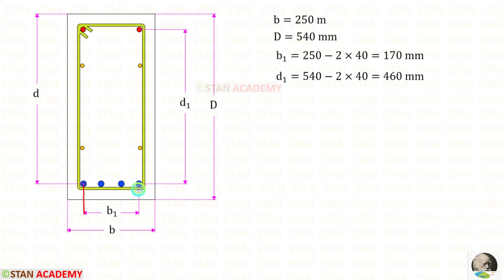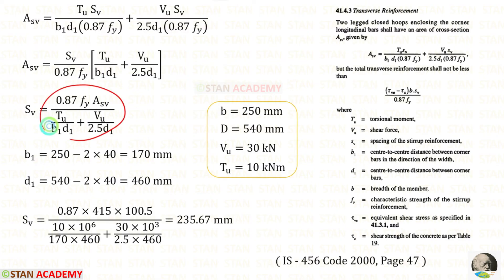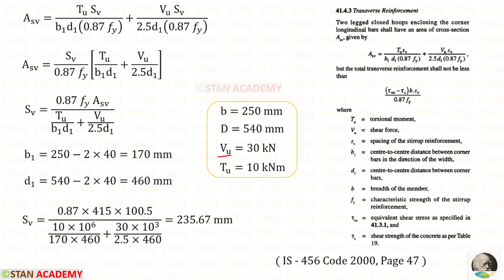B1 is the center-to-center distance of corner bars along the breadth. With effective cover 40, B1 = 250 minus 2 × 40 = 170 millimeter. Similarly, D1 is the center-to-center distance of corner bars along the depth. With effective cover 40, D1 = 540 minus 2 × 40 = 460 millimeter. Applying all values in the spacing formula — Tu is 10 kilo Newton meter converted to Newton millimeter by multiplying by 10⁶, and VU is 30 kilo Newton = 30 × 10³ Newton — for the first spacing we will get 235.67 millimeter.